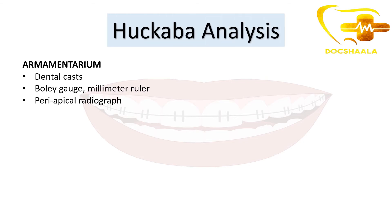The armamentarium required includes a dental cast, polygauss, millimeter ruler, and a periapical radiograph of the tooth whose size we want to measure.